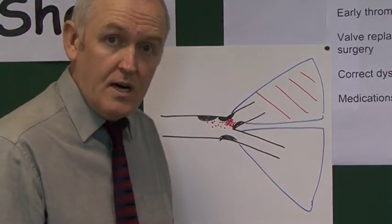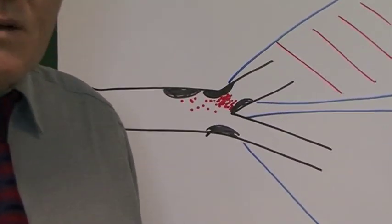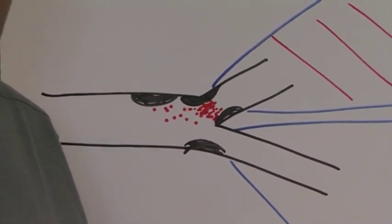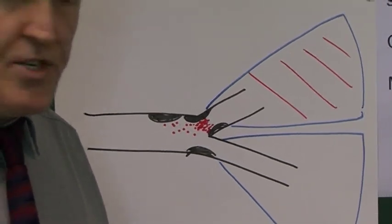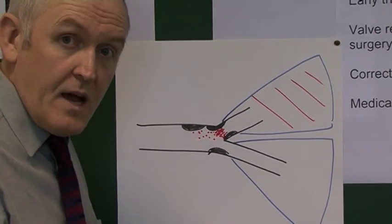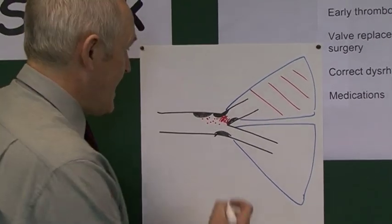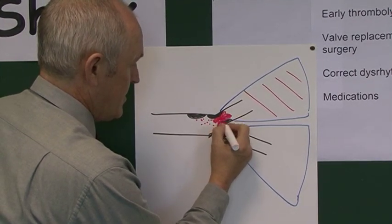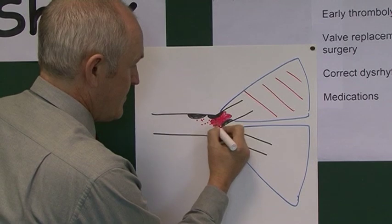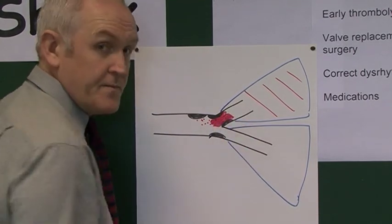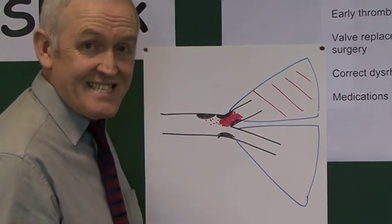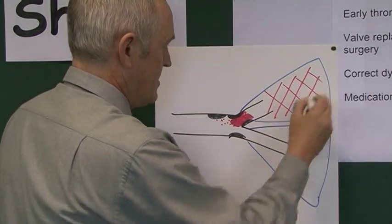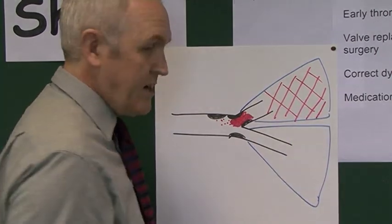With a lot more white thrombus you get a non-ST elevation myocardial infarction, a non-STEMI. This can progress further: instead of platelets alone, you start getting a proper red blood clot — a thrombosis — and that causes ST elevation myocardial infarction, cutting that area of heart muscle off from its blood supply.